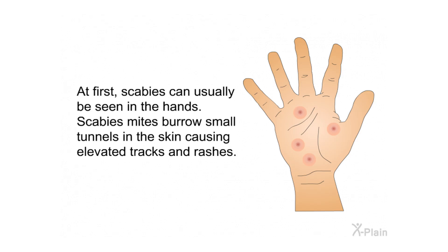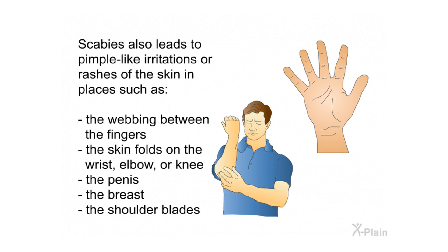At first, scabies can usually be seen in the hands. Scabies mites burrow small tunnels in the skin, causing elevated tracks and rashes. Scabies also leads to pimple-like irritations or rashes of the skin in places such as the webbing between the fingers, the skin folds on the wrist, elbow, or knee, the penis, the breast, and the shoulder blades.